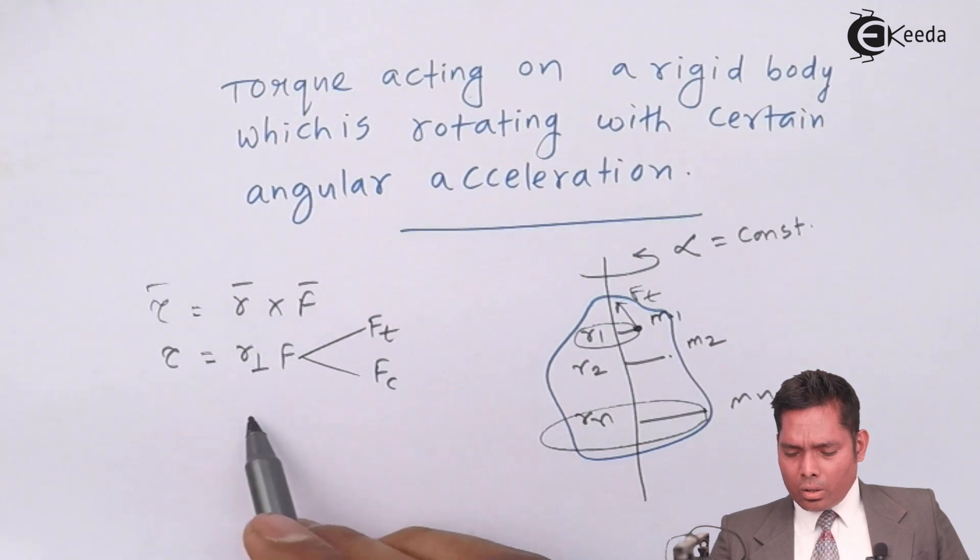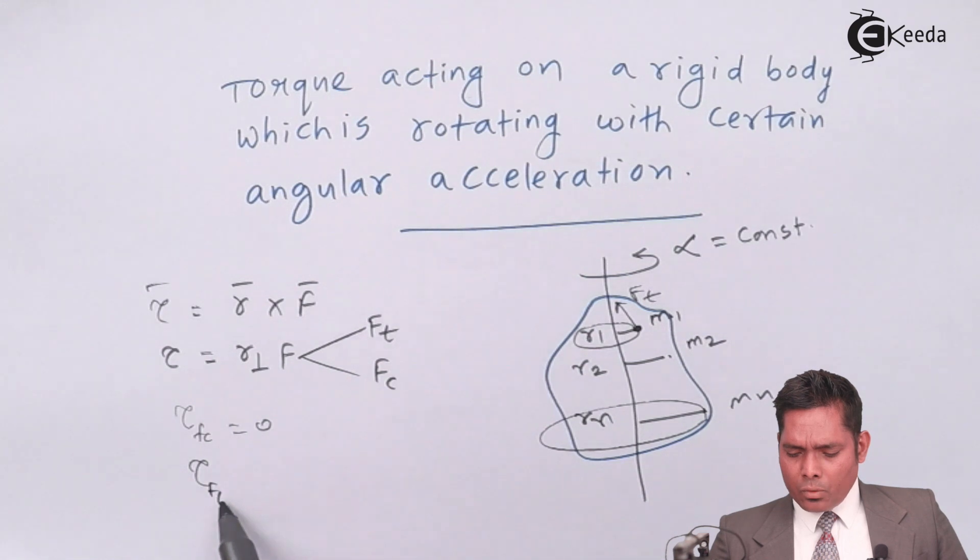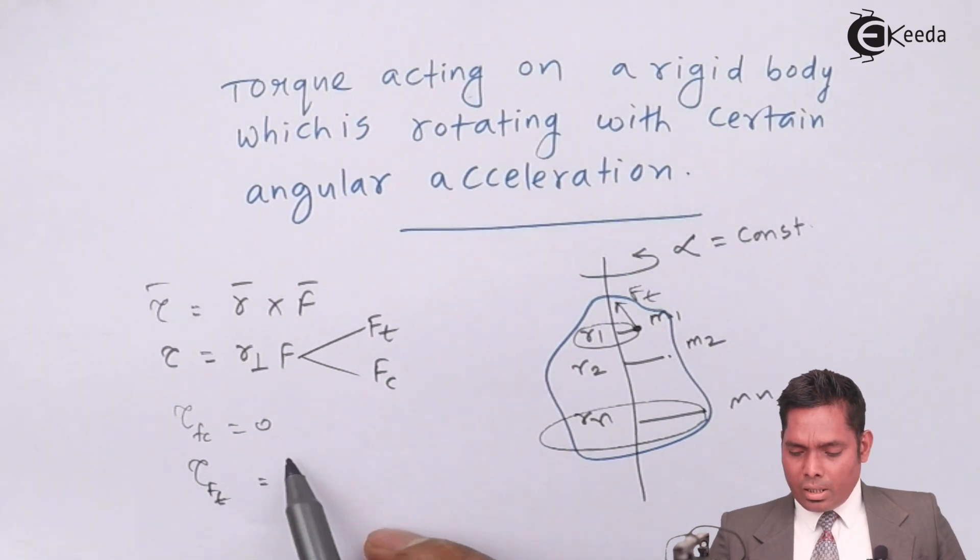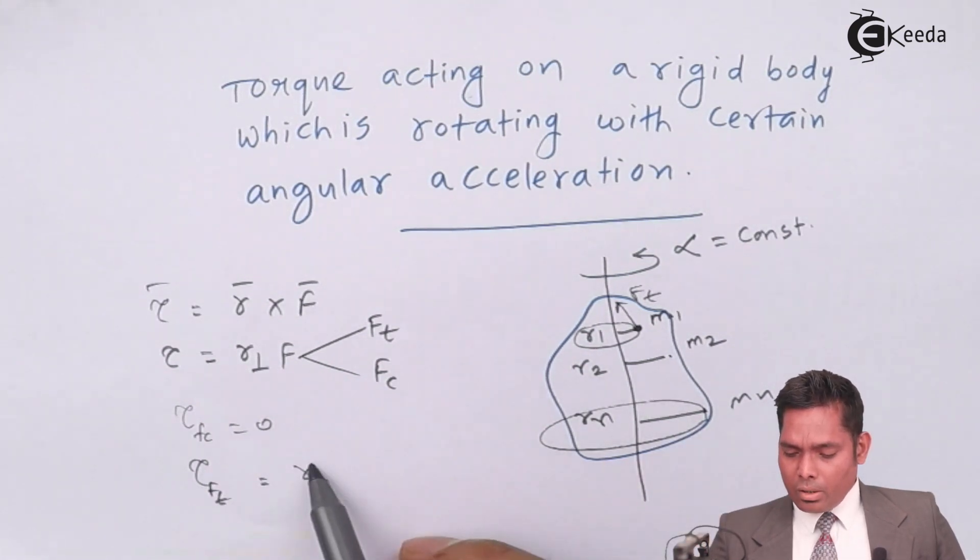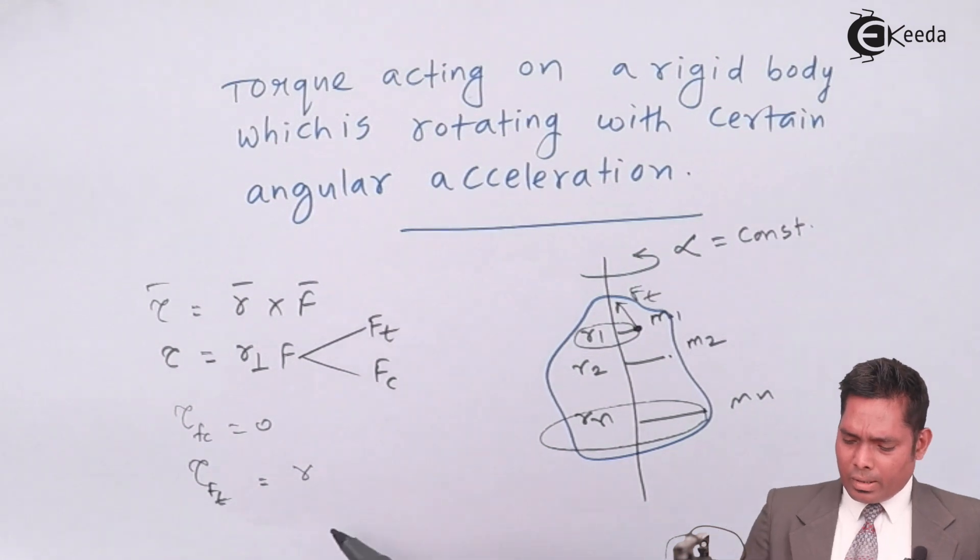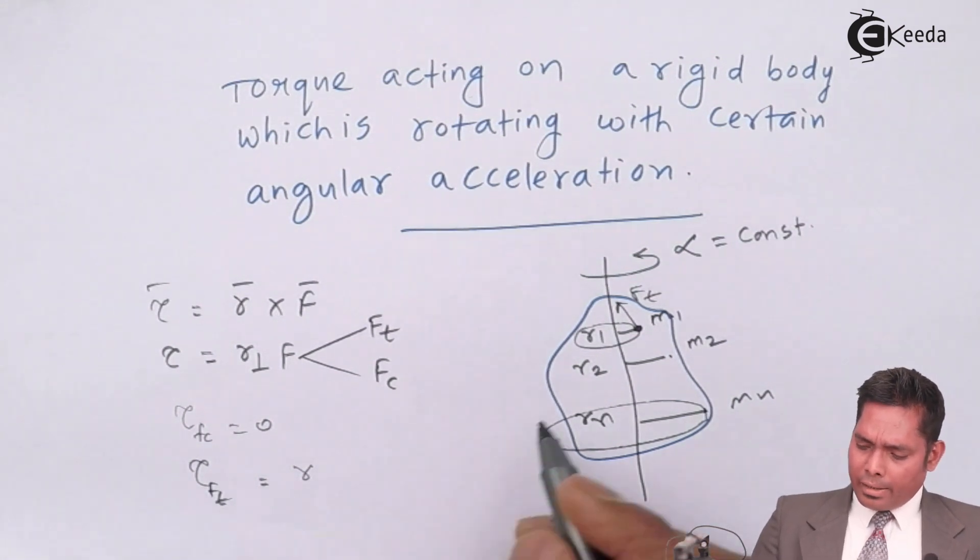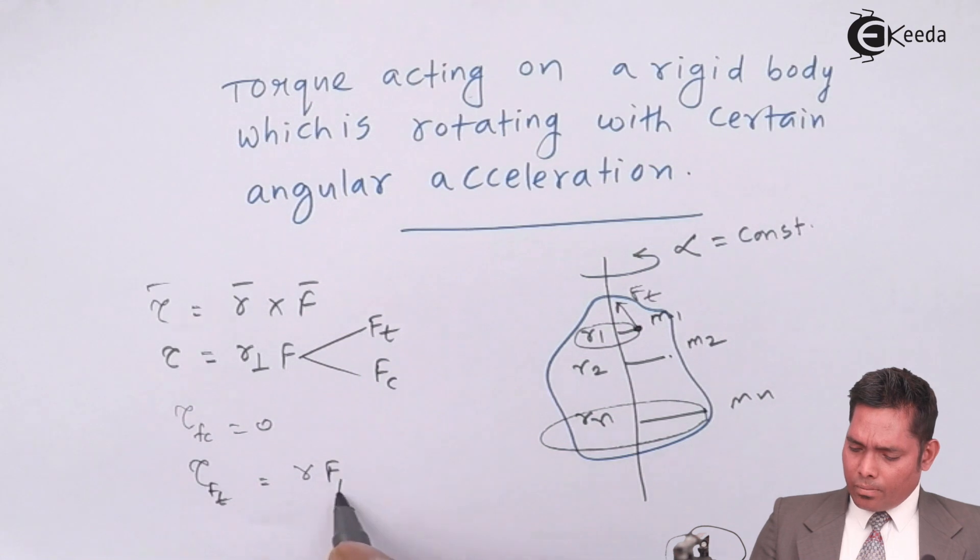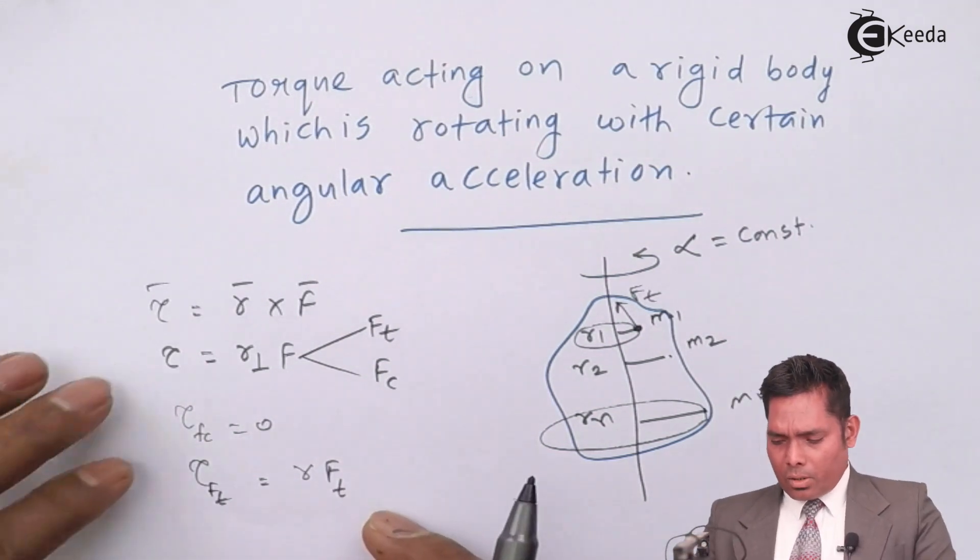So torque due to fc is 0 and torque due to ft we have to calculate, and that is r perpendicular which is r1, and this is ft, tangential force.